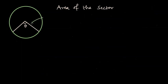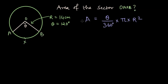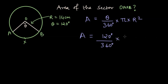Now let us solve a quick problem. Let the radius of the circle be 14 centimeters and theta be 120 degrees. What is the area of sector OAXB? From the formula, Area = (theta / 360°) × π × R². So here, Area = (120° / 360°) × π × 14². We will use the value 22/7 for pi.